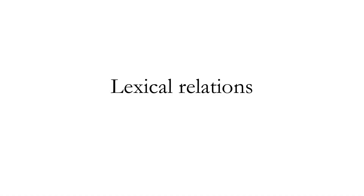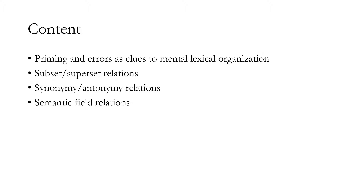We've already learned about how different morphemes are stored in our mental lexicon. In this module, we'll be thinking about the different kinds of ways that morphemes can be related to each other — what are the different sorts of relationships that exist within our lexicon, such that when we think of one word, other words might also be ready to be thought of, or what we call psychologically activated, by hearing another one. So we'll talk about priming and errors as clues to our mental lexical organization, how this lexicon might actually exist or work in our brain.